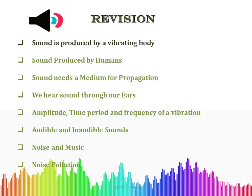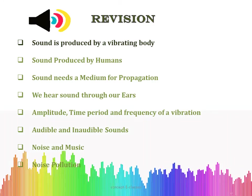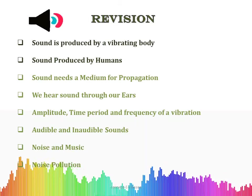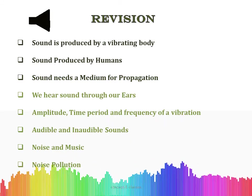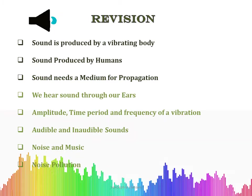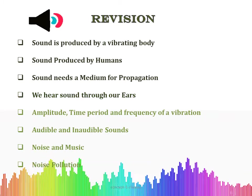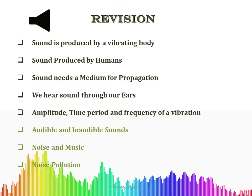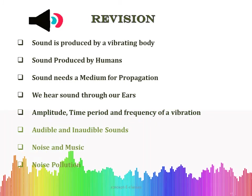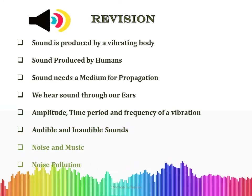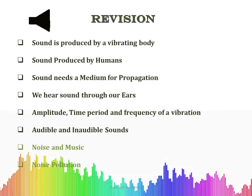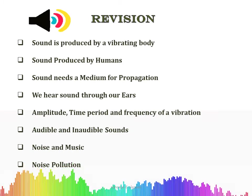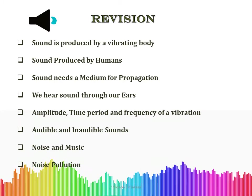First we saw how sound is produced — sound is produced by a vibrating body. Then we saw how sound is produced in humans, through the voice box or the larynx. Sound needs a medium to travel; it can travel through solid, liquid, and gas, except for vacuum. Then we dealt with how we hear sound through our ears, and studied wave properties: amplitude, time period, and frequency. We saw two types of sound — audible and inaudible — including infrasound and ultrasound, the difference between noise and music, and finally noise pollution. Now let's enter into the exercises.